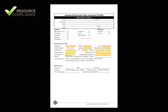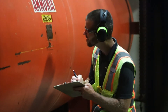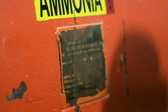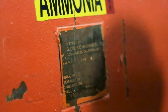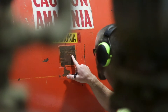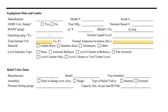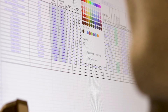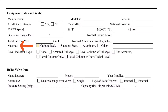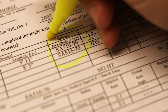Much of the information requested in the section titled Equipment Data and Limits can be obtained from the pressure vessel nameplate. The operating pressure, temperature, and normal liquid level will vary from vessel to vessel and will require operator input or design information about the system. The internal volume and normal ammonia inventory are typically calculated using a spreadsheet. If unknown, the vessel material can be determined from the Manufactured Data Report or U1 form.